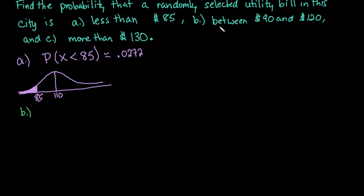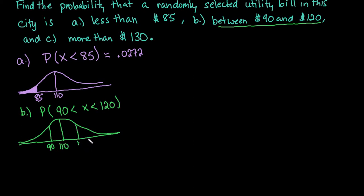For the next one, we're looking for the probability between 90 and 120, written as 90 < X < 120. Remember 110 is our center. 90 is less than one standard deviation below, and 120 is less than one standard deviation above, so we're finding the area in between.